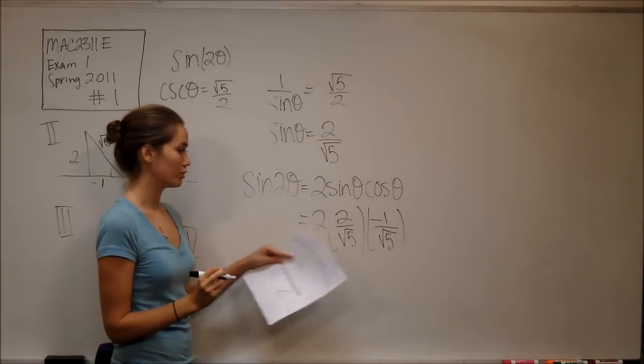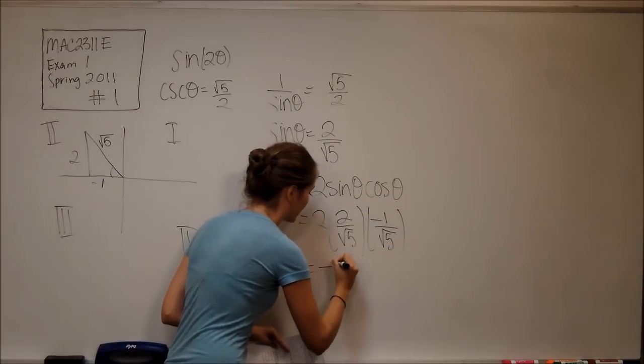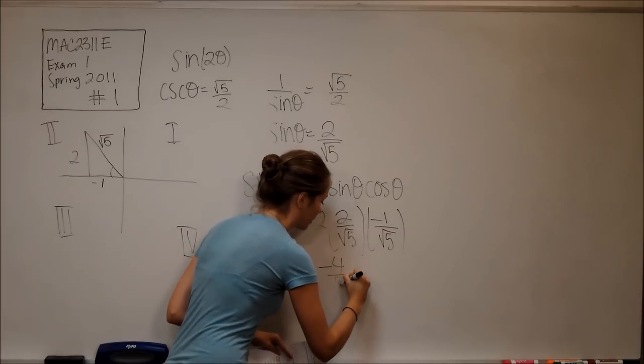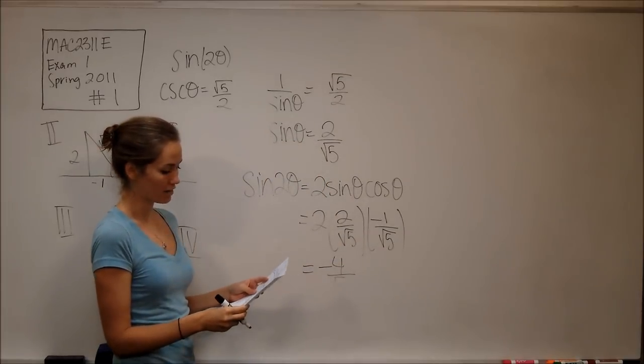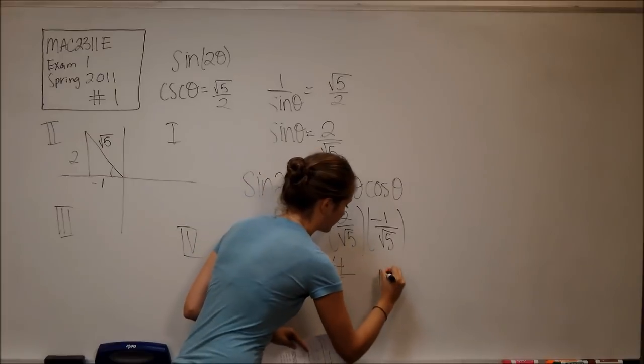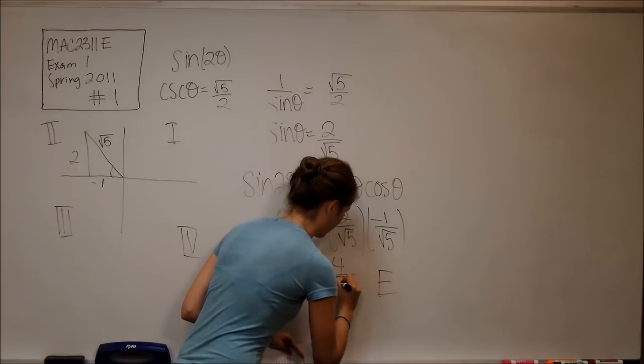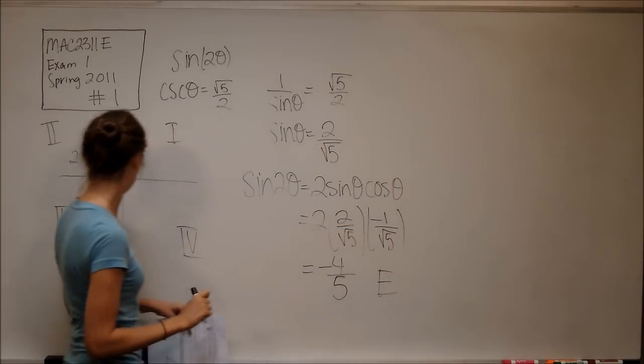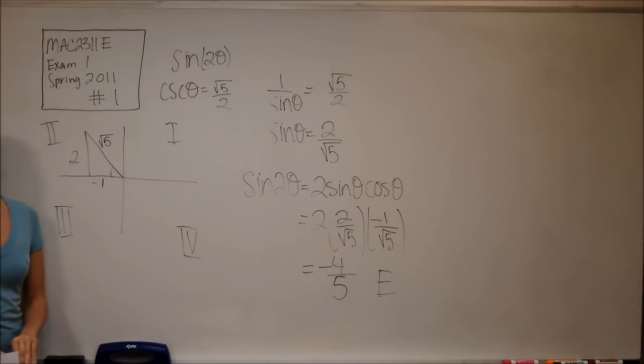And so now we just need to multiply this all through, which is going to give us a negative four over five, and so our answer is e. And that is it for problem number one.